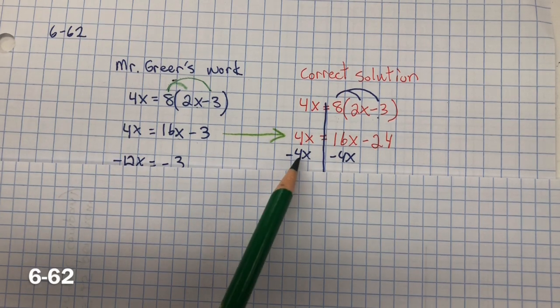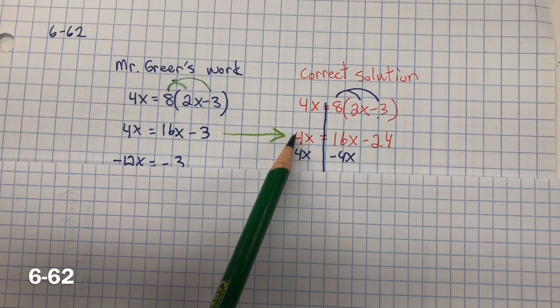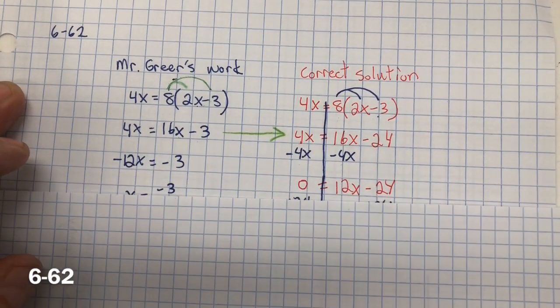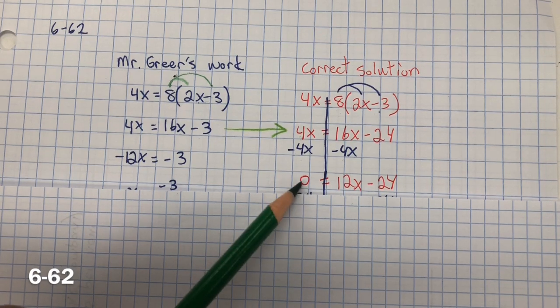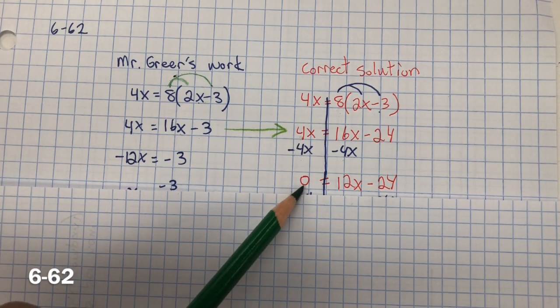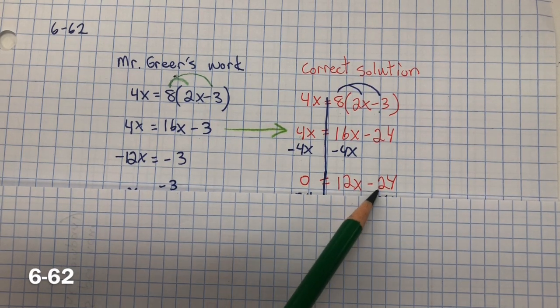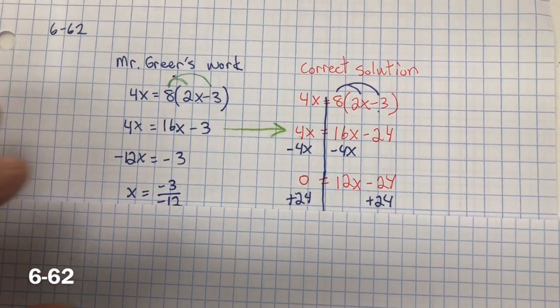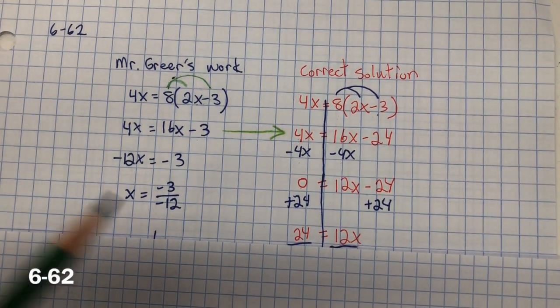Now I'm going to do inverse property of addition, which is subtraction. So subtract 4x from both sides. 4x minus 4x is 0. It's very important you don't forget to put that 0. Now we need to get the x by itself, so inverse property of subtraction, which is addition. Add 24 to both sides.